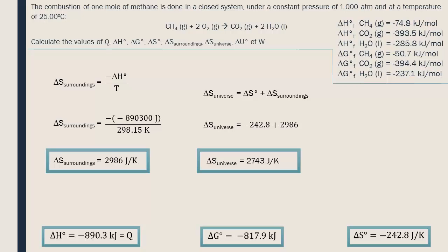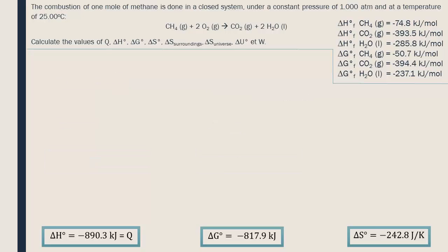Now all there is left is to calculate delta U and W. To find delta U, we will use the following equation. Delta N gas refers to the variation of moles of gas in the reaction.